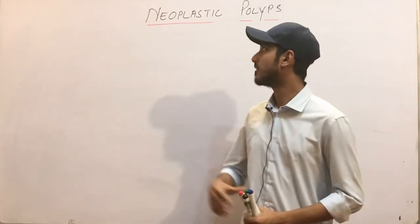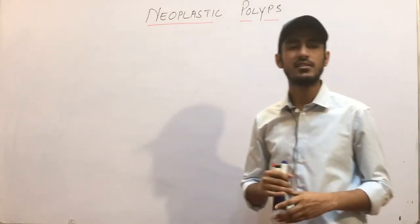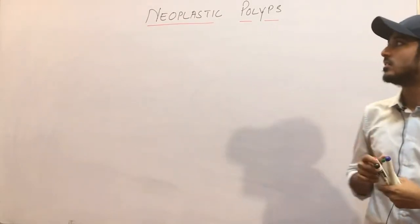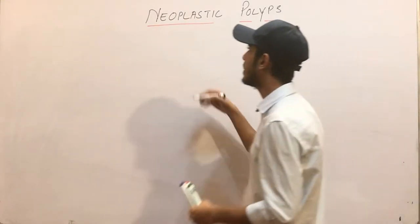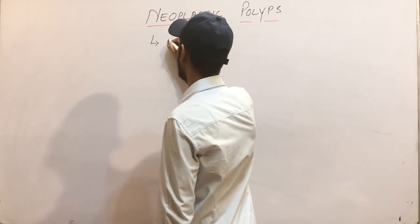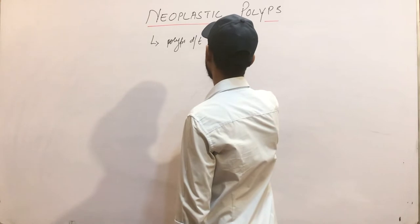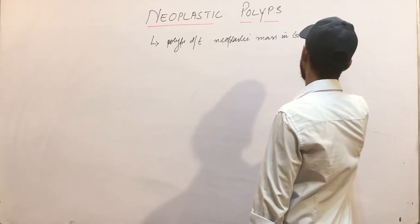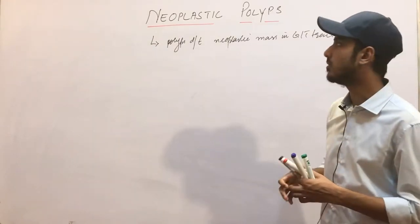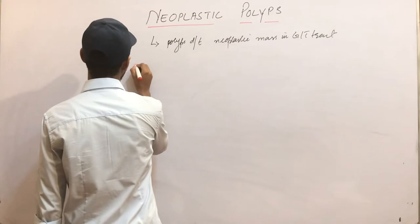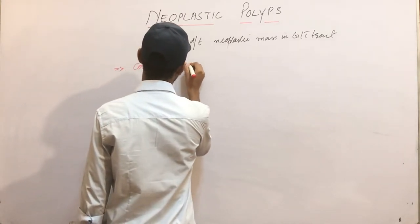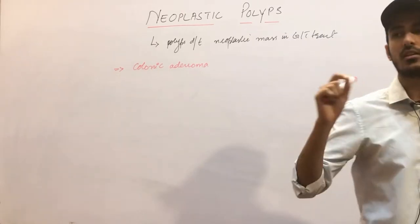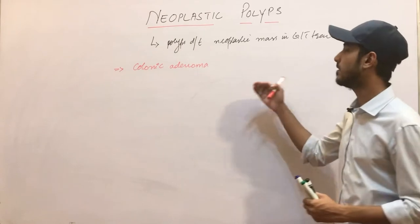This is Dr. Saad, and today my topic is the neoplastic prolapse. As in our previous lecture, we were discussing about the non-neoplastic prolapse. So in this lecture, we will be covering the neoplastic prolapse. Neoplastic means those prolapse that are due to some neoplastic masses — prolapse due to cancerous mass in the GIT tract. The most common site for the neoplastic prolapse is the colon, and the most common is the colonic adenoma.